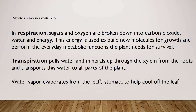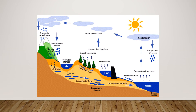In transpiration, water and minerals are pulled up through the xylem from the roots and transported to all parts of the plant. Water vapor evaporates from the leaf's stomata to help cool off the leaf. Here is an illustration of the hydrologic water cycle: water evaporates from plants, condenses in clouds, falls back to the ground, is taken up by plants, or runs off back into the oceans, lakes, and rivers, with some stored in groundwater, before evaporating back up into the system to condense and create rain and precipitation again.